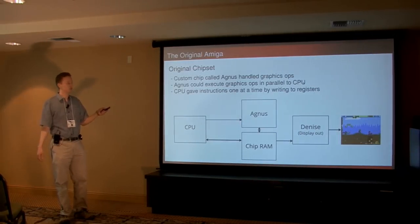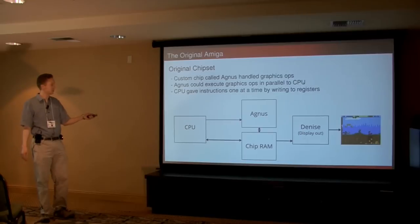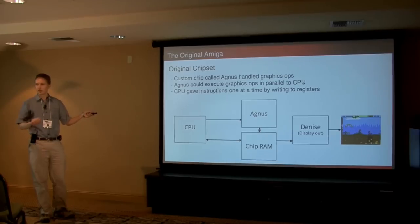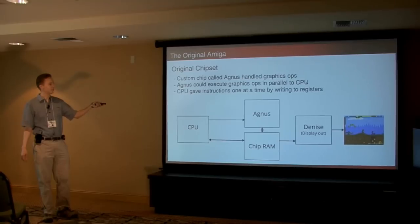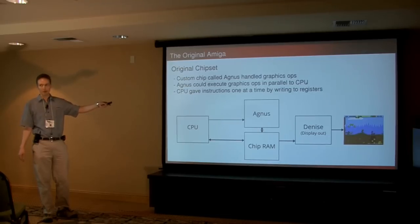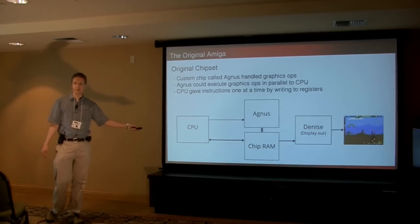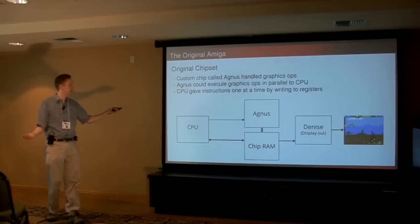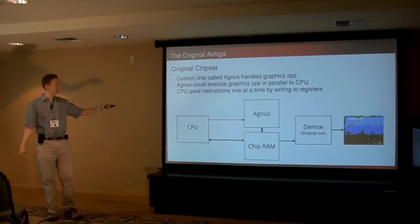This is a very simplified block diagram of the original chipset, dropping off stuff like audio. What you've got is the CPU telling the chip Agnes what to do — that's where the blitter and the copper and all that was running. That read and wrote graphics to chip RAM, and then it was Denise that actually ran the display out onto the monitor. So the nice thing was that you had a coprocessor, like a mini proto-GPU, doing stuff in parallel to the CPU.